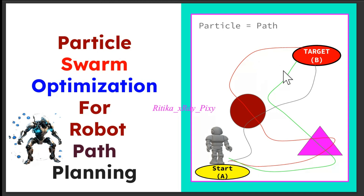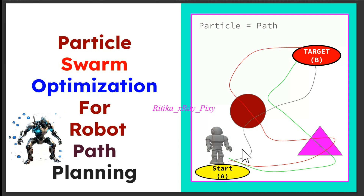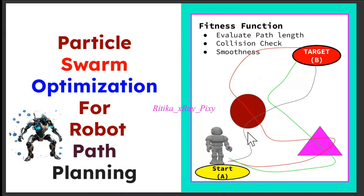Suppose we have a 2D environment where the robot starts from point A and the goal is to reach point B, with fixed obstacles like blocks scattered in the space. First, we initialize each particle representing a potential path — initially these paths may pass through obstacles or take longer routes. After initialization, we apply a fitness function to evaluate the quality of each path based on path length, collision check, and smoothness.